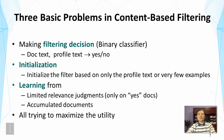The three basic problems in content-based filtering are: first, making a filtering decision — a binary classifier that, given a document and a user profile, says yes or no on whether to deliver it. Second, an initialization module to get the system started with only a very limited text description or very few examples from the user. Third, a learning module that learns from limited relevance judgments, since we can only learn from feedback on delivered documents.